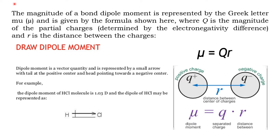The magnitude of dipole moment is denoted by the Greek letter mu (μ), where μ = q × r. Here, q is the magnitude of the charge and r is the distance between the charge centers — usually the bond distance of that particular molecule. q⁺ is always equal to q⁻, and the dipole moment always has a direction. HCl has a dipole moment of 1.03 Debye.